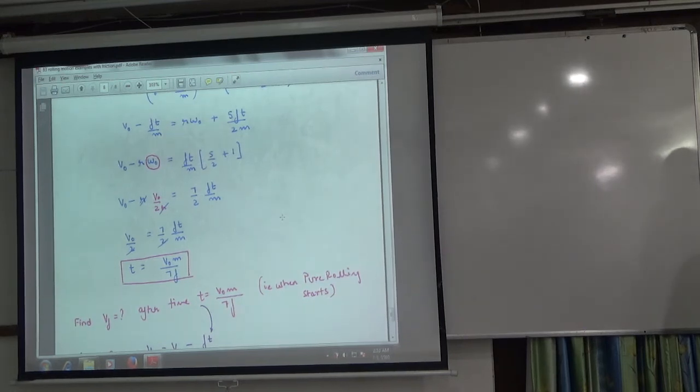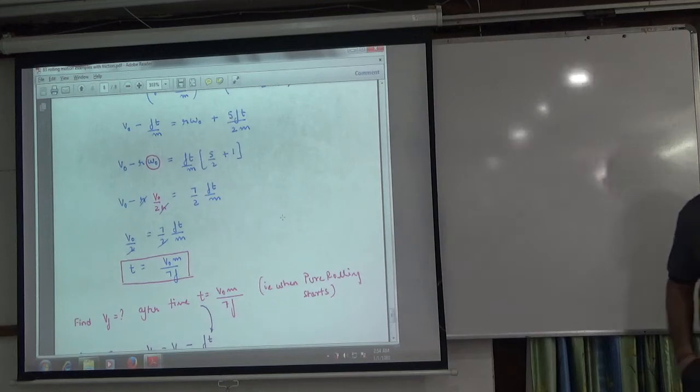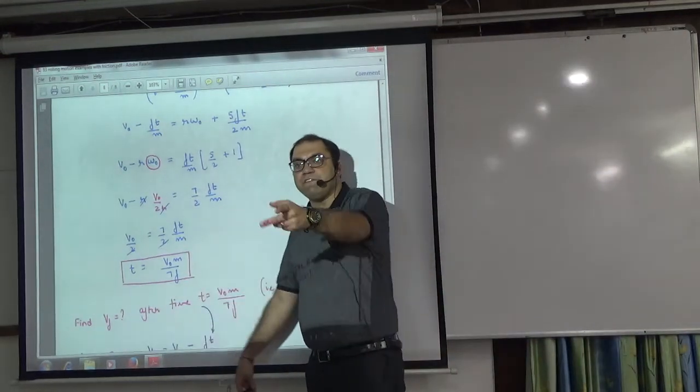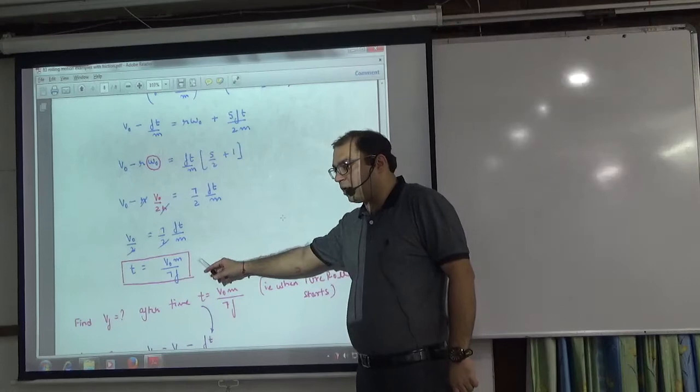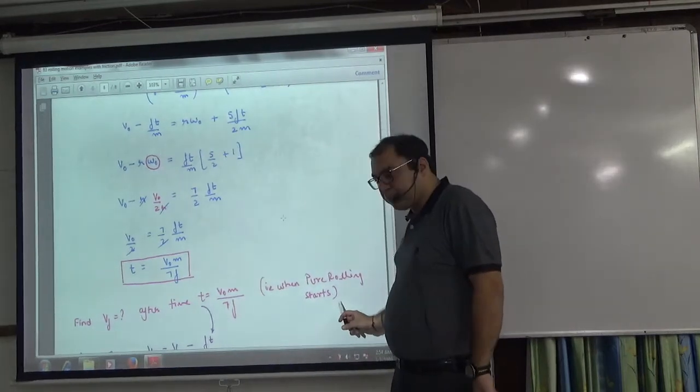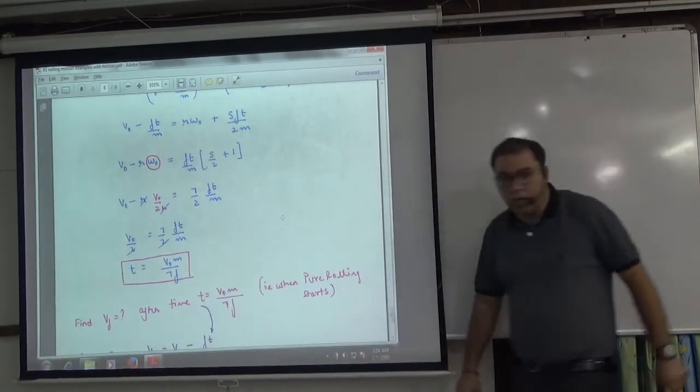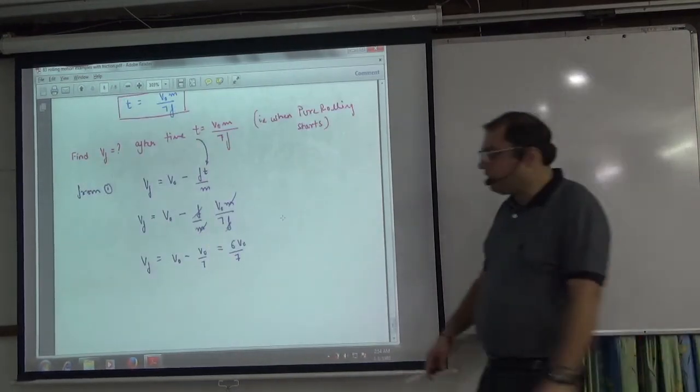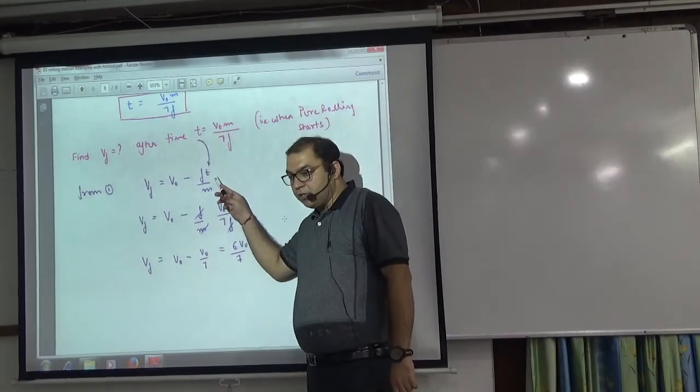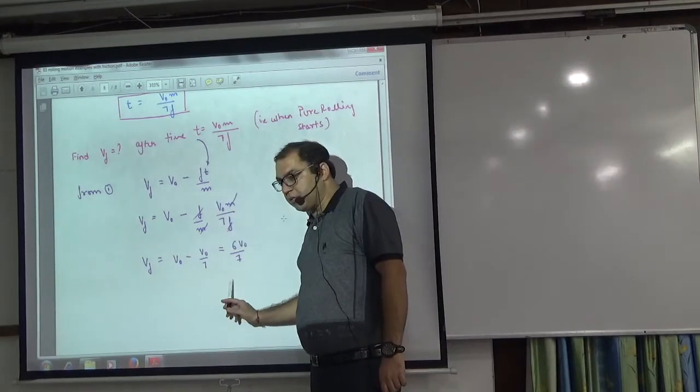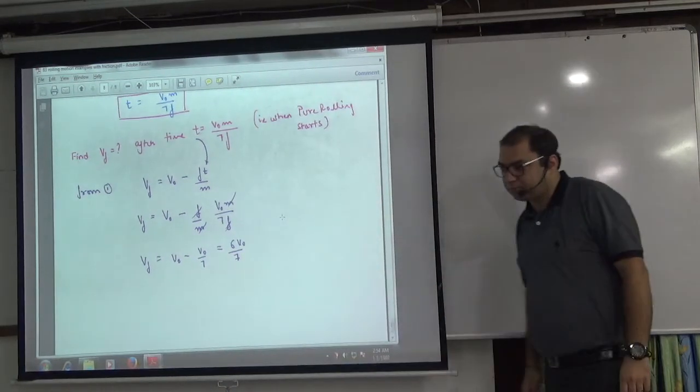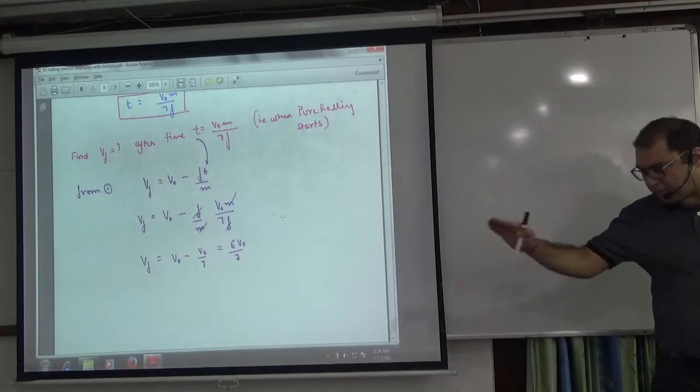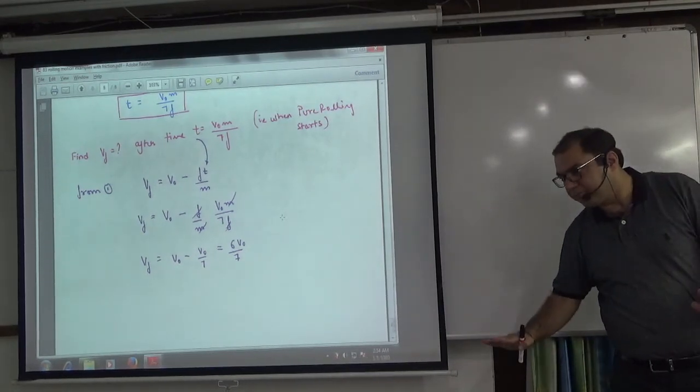One more question. One big question is on this one's continuation. This also: what will happen after this time? Because after this time, pure rolling started. What will happen after this time? Now, first equation we have left: Vf's value. Let's put this Vf's time. Solve and Vf's value comes from 6 by 7 into V0. The logic came to translation and rotation are different.